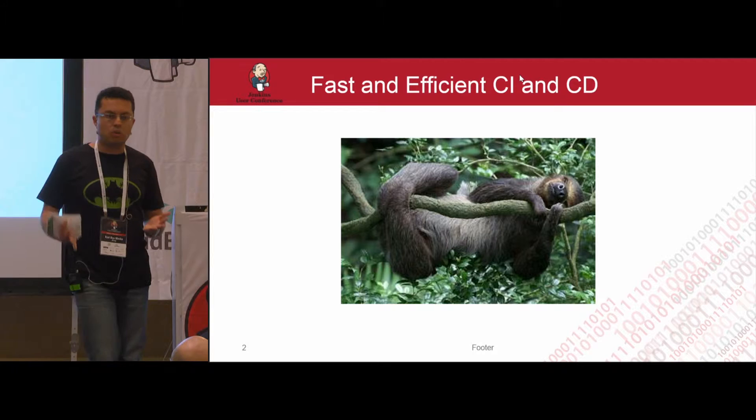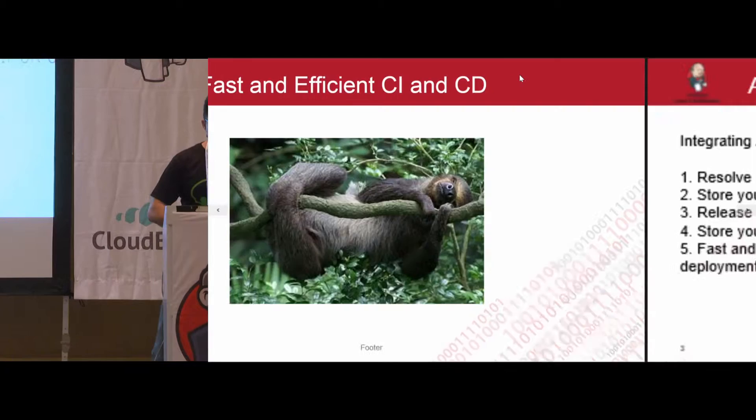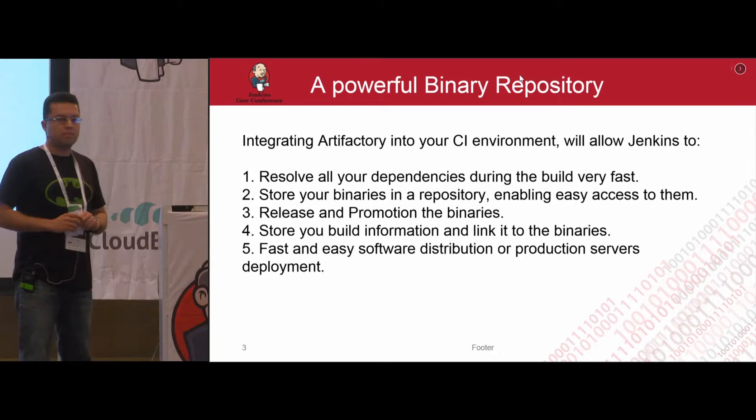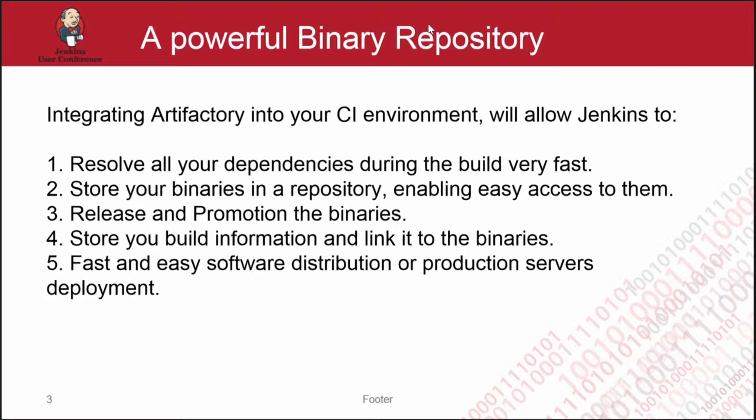At the heart of your continuous integration environment is your CI server. You have Jenkins installed and managing all of your builds and everything else. But having a powerful CI server is not enough — you also need a powerful binary repository, which is Artifactory. Having Artifactory and Jenkins integrate together is the first thing we want to achieve in order to reach that goal.